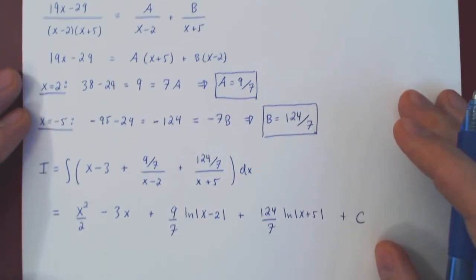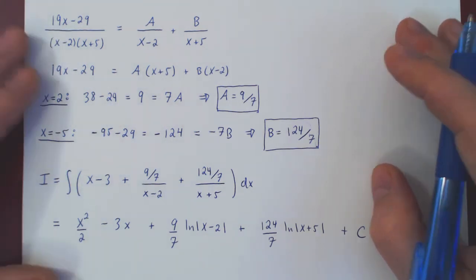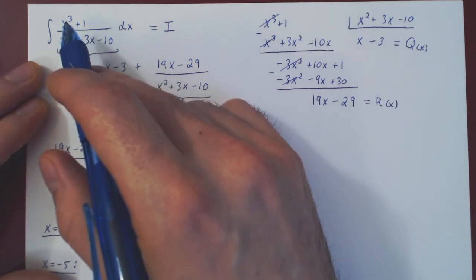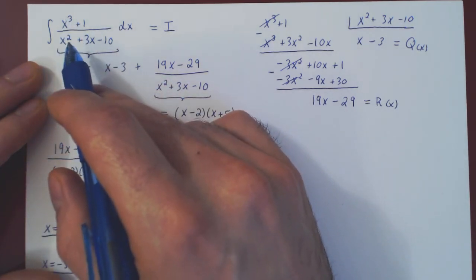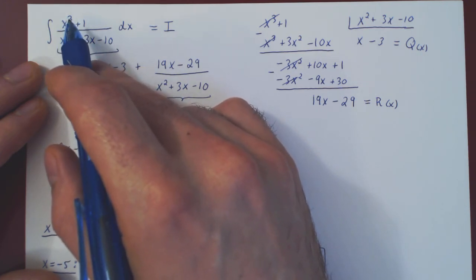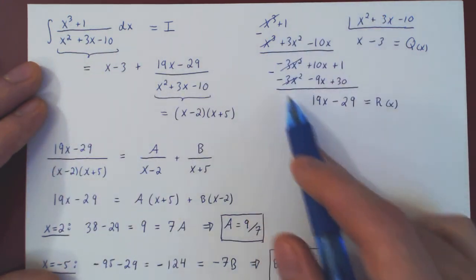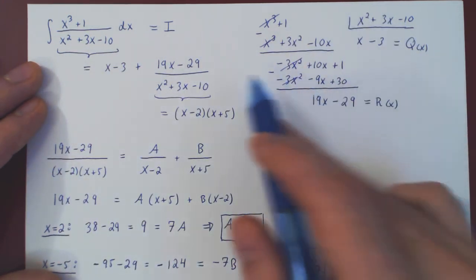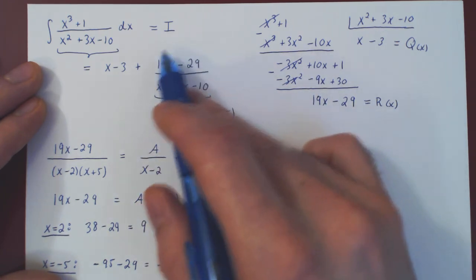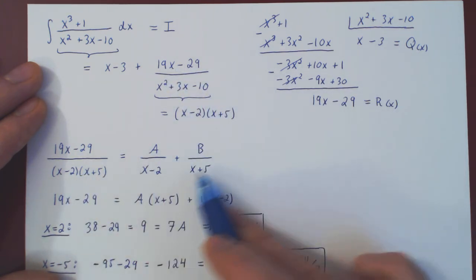And so we're done. Now, one thing that you really have to keep in mind is always first check the degree of the numerator and denominator. If the degree of the numerator is larger than or equal to the degree of the denominator, as was the case here, you have to first perform long division. And then what comes out as the remainder of your long division, then you want to decompose this rational function into a sum of partial fractions.